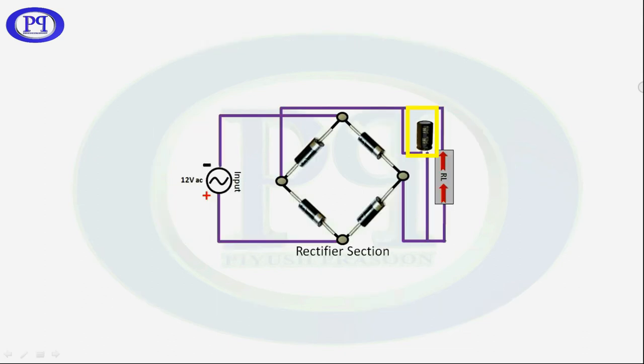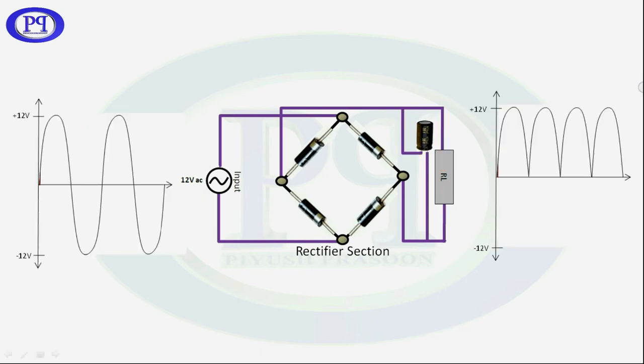Now let's introduce the filter, that is the capacitor, in the circuit. So here we need to connect the capacitor parallel to load resistance RL. We are placing it parallel to load resistance RL because the capacitor should be fully charged till the signal is reaching its maximum level, that is 12 volts in this case.